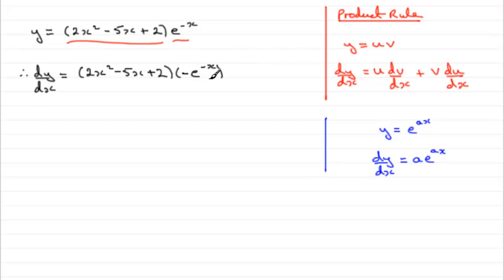Anyway, back to the product rule, one part times the differential of the other part, we just differentiate that, and then plus, and then we take the other part, e to the minus x, and multiply it now by the differential of this quadratic factor.